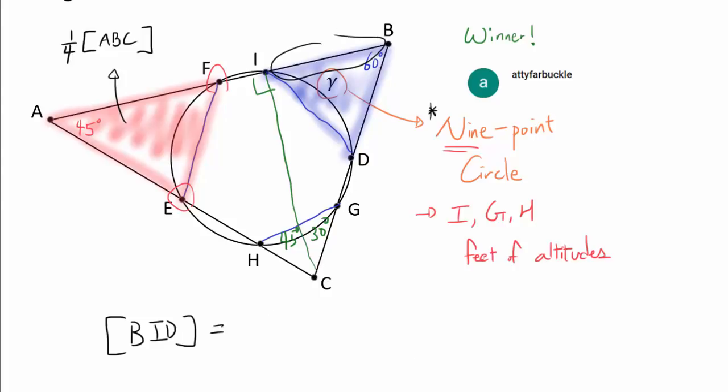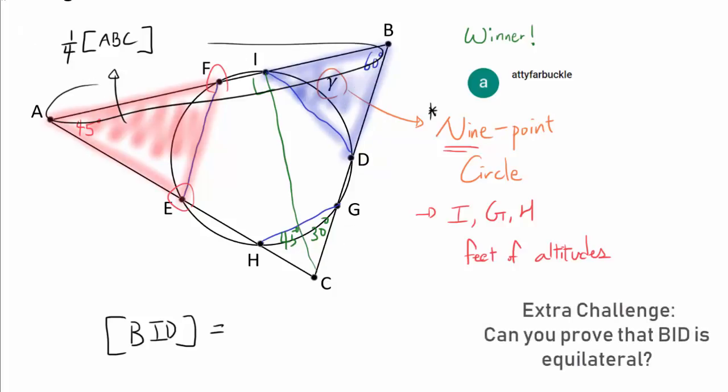Well, we can do that once we can write BI and BD in terms of AB and BC respectively. Because area of BID is 1/2 BI times BD times sine of 60 degrees.